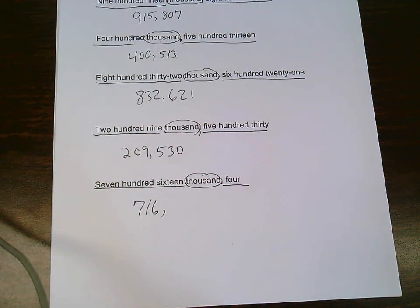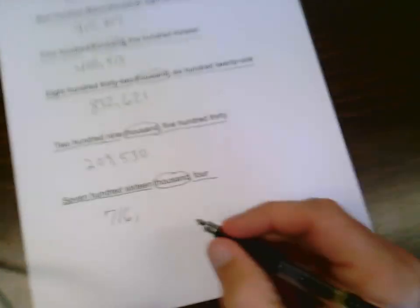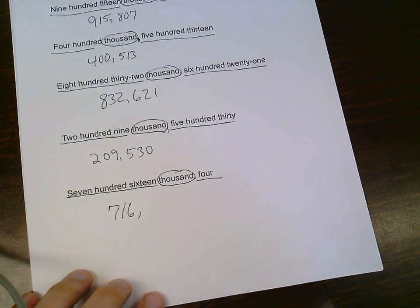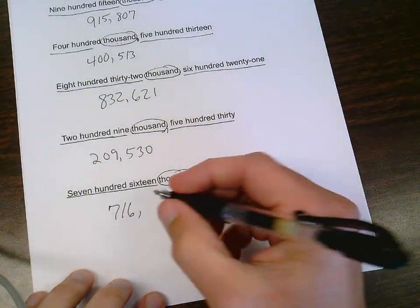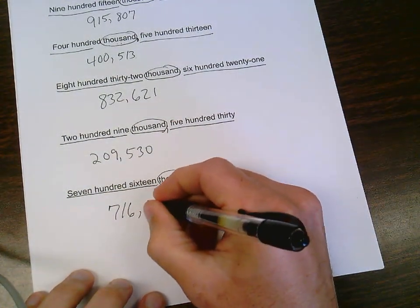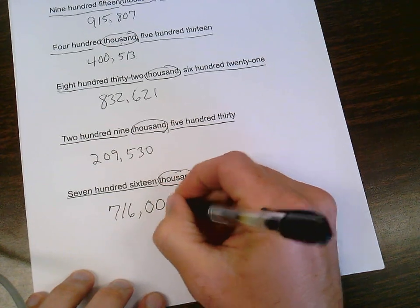Now, all periods have to have three digits in it. So I need to make sure the ones period says 4 with three digits. So I put 004 in there.